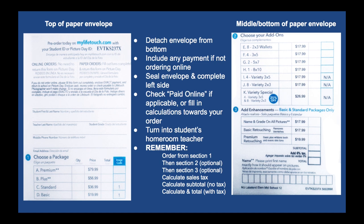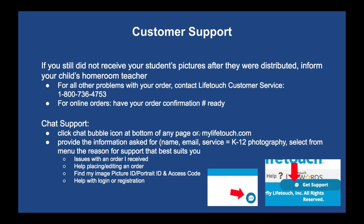If you order something with an asterisk — like having the name engraved in the pictures — make sure to write the student's name, one letter per box at the bottom. Otherwise, leave it blank if you're not getting that. Remember to seal the envelope and return it to your child's homeroom teacher. If you have any problems with your order, tell the teacher first and we'll try to help — they may be able to get it reordered or resent if you don't receive your pictures when everyone else does.